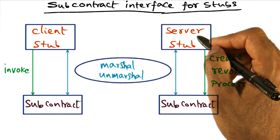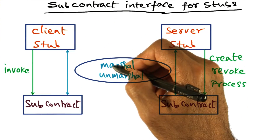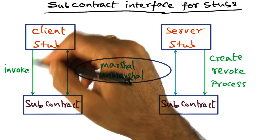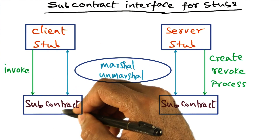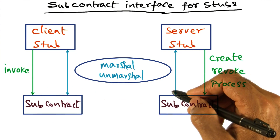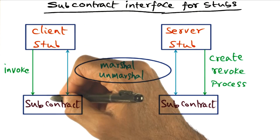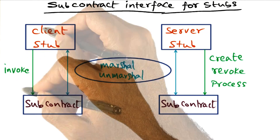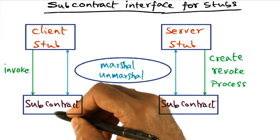This is true on the server side as well as on the client side. Once the marshalling has been done, the client side makes the invocation, and the subcontract knows exactly where that invocation is going to go, so it takes care of that. The subcontract on the client side has this invocation mechanism because the client is the one making the invocation.